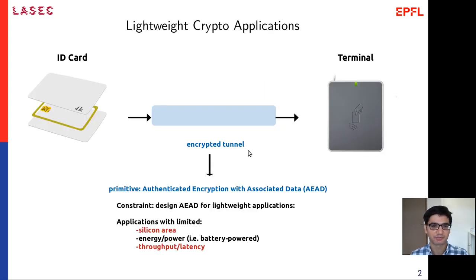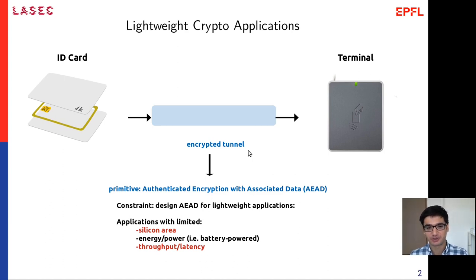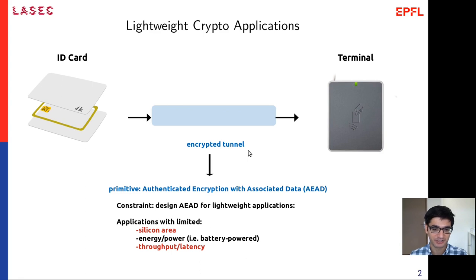Let me start by giving you an example application in which lightweight cryptography is essential. On the left side, what you're seeing is an identity card equipped with a chip inside, and on the right side there's a terminal wirelessly powering this card for communication. The goal is to establish a secure tunnel between these two parties for bidirectional communication, typically realized by the primitive authenticated encryption with associated data. In this paper, we are concerned with the efficiency or lightweightness of implementing such a scheme.